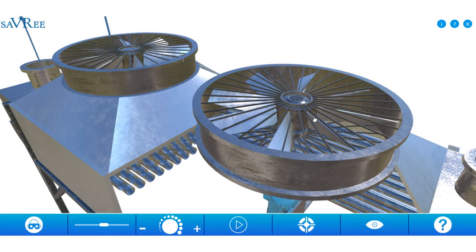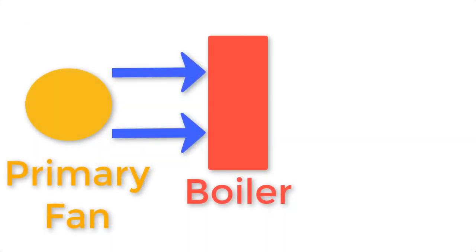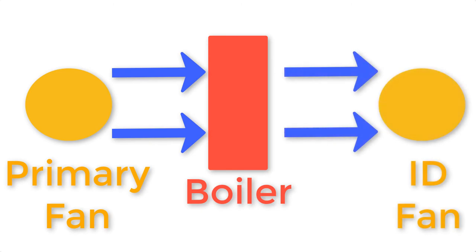Now it might not always be a heat exchanger — it might be something else such as a boiler. So maybe we're using a fan, called a primary air fan, to push air into the boiler and use that air for combustion. Then we'll use an induced draft fan, typically called an ID fan, to draw the exhaust gases out of the boiler. So there are different applications for forced and induced draft fans.